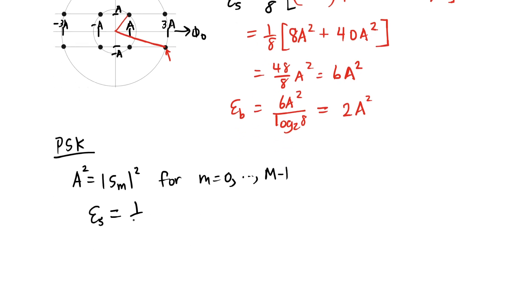Average symbol energy is going to be the average of all these. This is just going to be 1 over m times m times a squared. So I'm going to get a squared out of the average symbol energy.